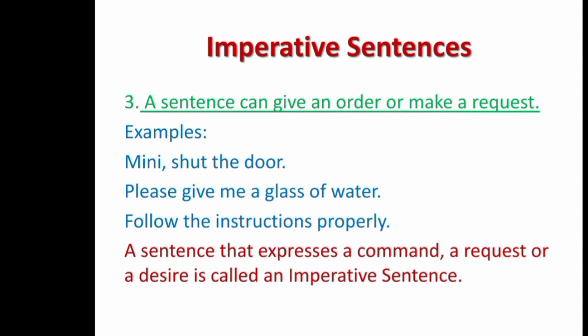Now comes imperative sentences. A sentence that gives an order, makes a request, gives advice, or makes a wish — all those kinds of sentences are called imperative sentences. For example, wish sentences like 'Happy birthday' and 'May God bless you' are wish or desire sentences. We can also call these optative sentences.